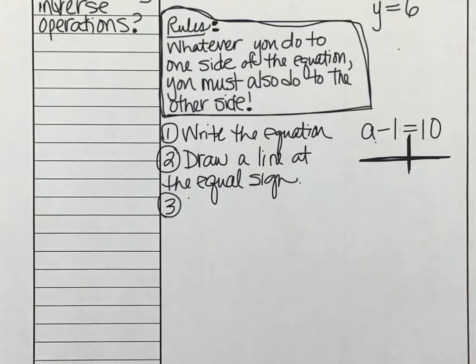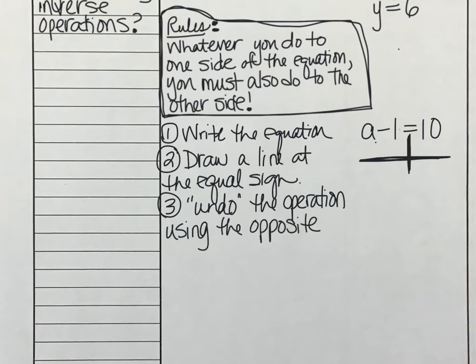The third thing that we need to do is we need to undo the operation using the opposite. So in other words, the opposite of subtraction is addition. So we're going to undo the operation here by adding to both sides. And what we're adding is the number that's next to the variable. In this case, the number is 1. So we're trying to balance those out and make 0, which we did. And A is equal to 10 plus 1, which is 11. So the last thing that we need to do is actually compute. You can use a calculator for that, of course, if you need to. So the answer to the equation A minus 1 equals 10 means that A must be 11.